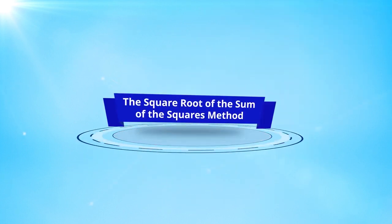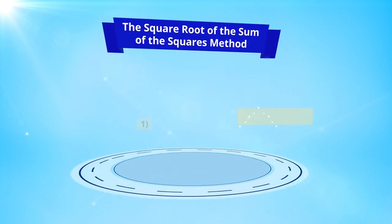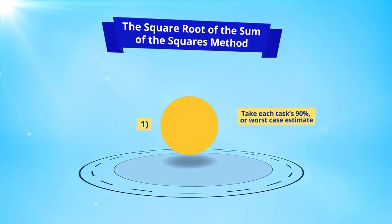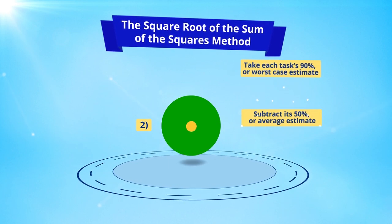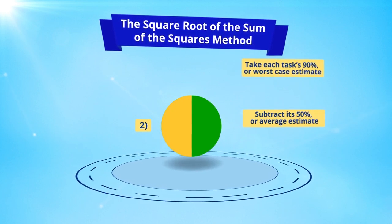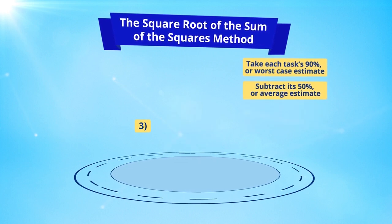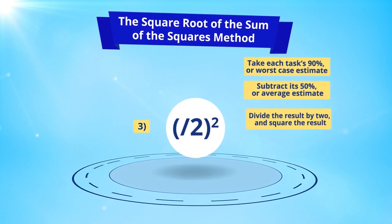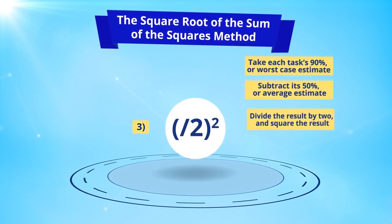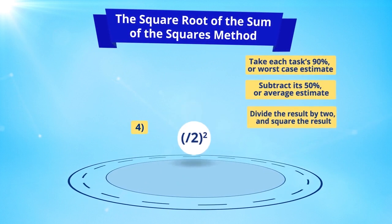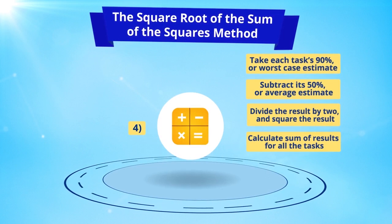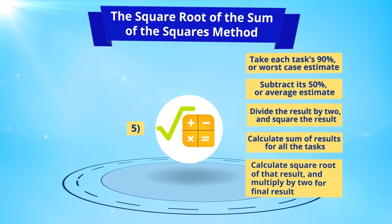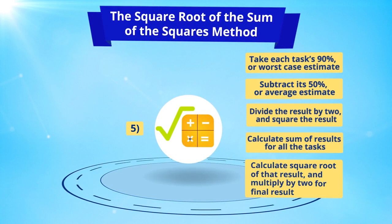In summary, to calculate the square root of the sum of the squares method: take each task's 90% or worst-case estimate, subtract its 50% or average estimate, divide the result by 2 and square it, calculate the sum of the results for all tasks, and finally take the square root of that result and multiply by 2 for the final result.